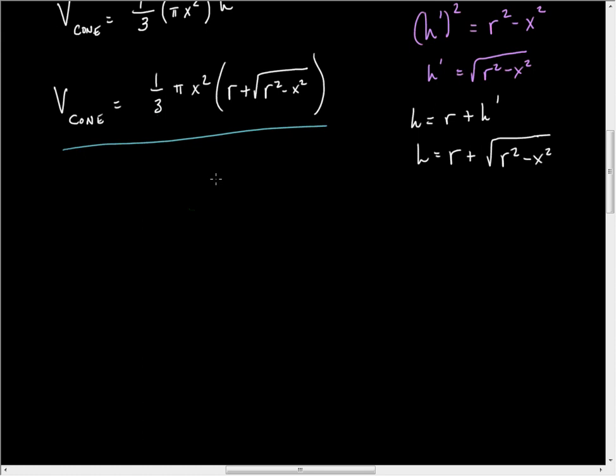And so X can't be zero because then the cone wouldn't exist. Then again, X can't be negative either. So X must be positive, but not zero, but positive.